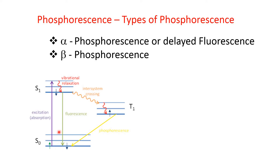When the electron is in the triplet excited state, the transition during phosphorescence occurs from the triplet state to the singlet state. This means the phosphorescence transition is a transition between two electronic states of different spin multiplicity, which involves a change in electron spin — or inversion of electron spin.